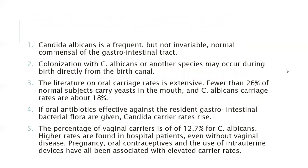Candida albicans is a frequent but not invariable normal commensal of the GI tract. Colonization with Candida albicans or another species may occur during birth, directly from the birth canal. Fewer than 26 percent of normal subjects carry Candida yeast in the mouth, and the Candida albicans carriage rate is about 18 percent. If oral antibiotics effective against the residual GI tract bacterial flora are given, the Candida carrier rate rises. The percentage of vaginal carriers is 12.7 percent for Candida albicans, and higher rates are found in hospital patients.